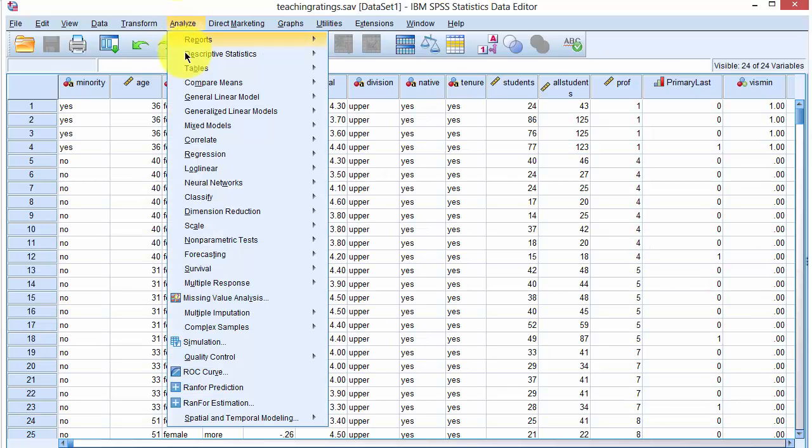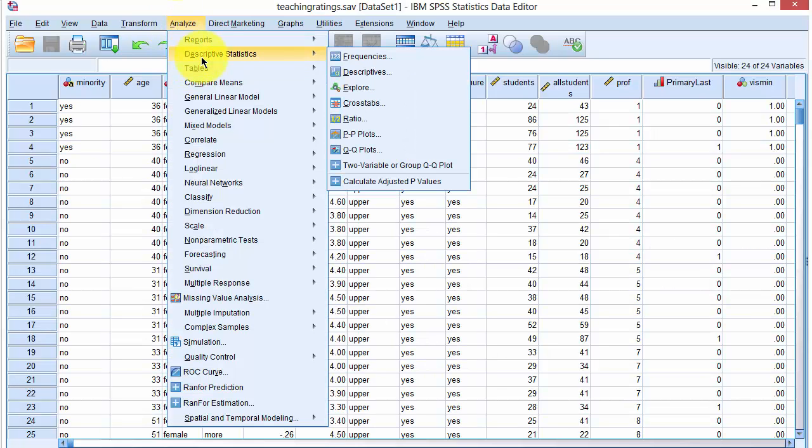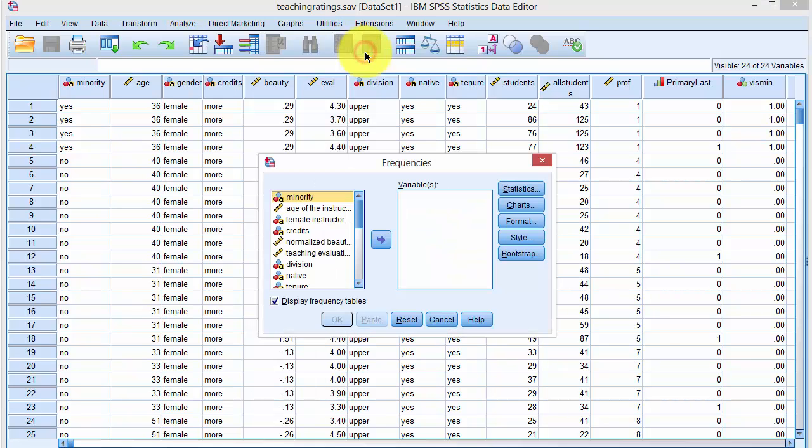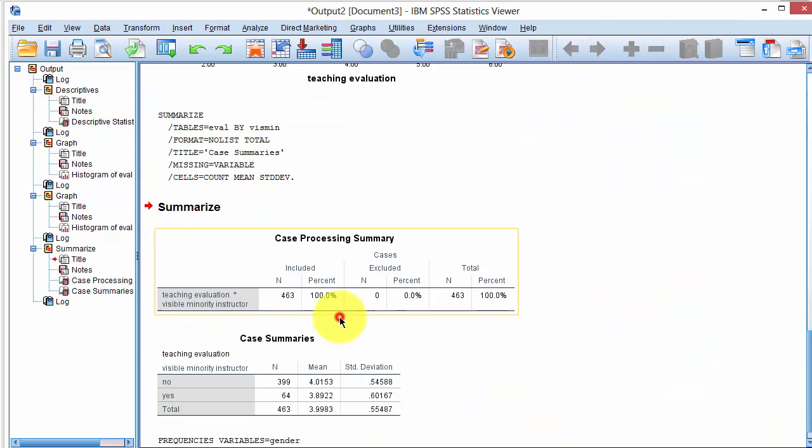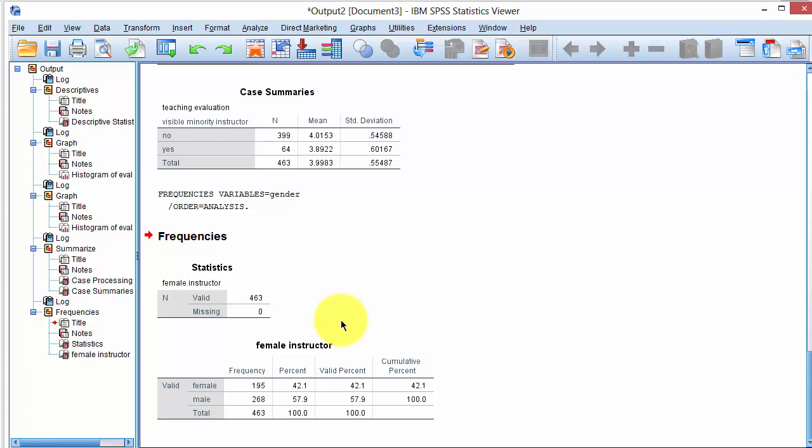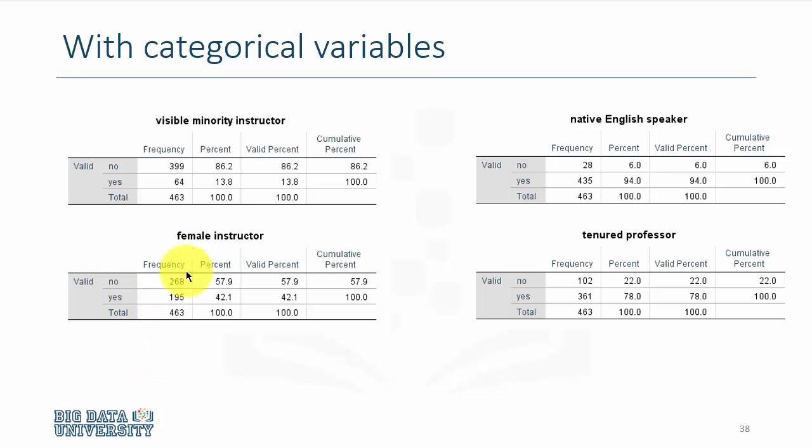So in SPSS, we say analyze and descriptive statistics, frequencies. Pick one of the categorical variables, so for example, female instructor, and say OK. And in our output window, we get the breakdown by courses, so 42.1% of the courses were taught by female instructor, which is what we got here. And we can repeat this in SPSS.